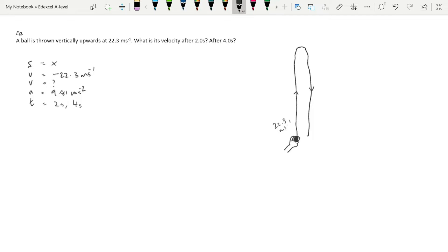We want v, so the most obvious SUVAT equation is v equals u plus at. That's going to be minus 22.3 plus 9.81 times 2. Let's do 2 seconds first. That gives us minus 2.68 meters per second.